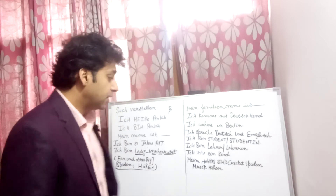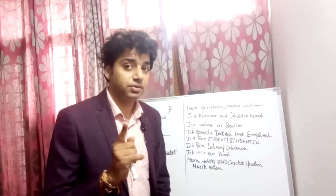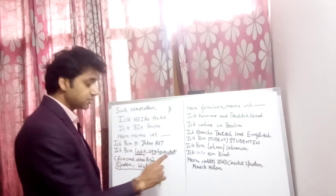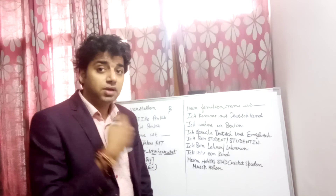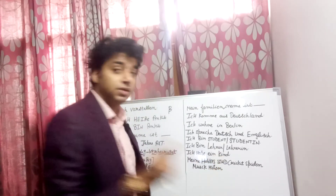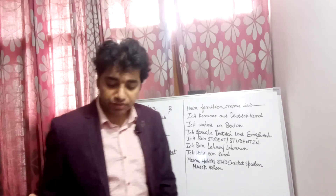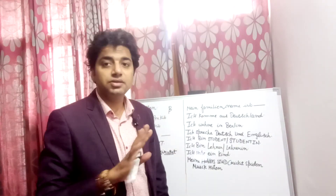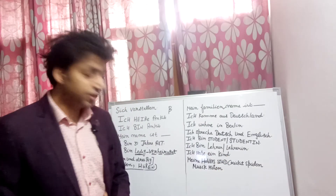If I say 'I have a kid' or 'I have one child,' the phrase is 'Ich habe ein Kind.' If I don't have a child, I say 'Ich habe kein Kind.' 'Kein' means 'no' or 'not any,' so 'Ich habe kein Kind' means 'I don't have a child.'